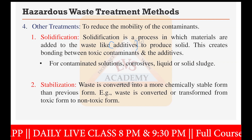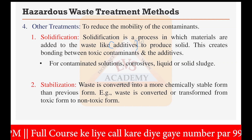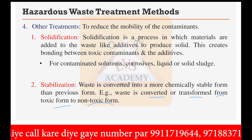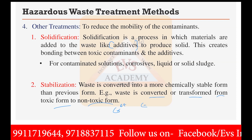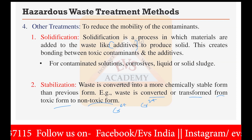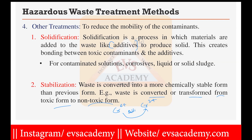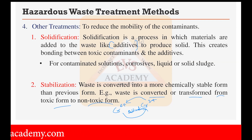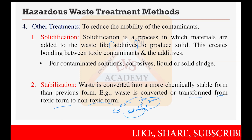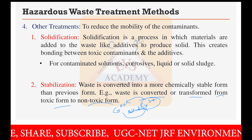The stabilization method converts waste into a more chemically stable form. For example, waste is transformed from a toxic form to a non-toxic form — such as chromium 6+ being converted into chromium 3+. However, this does not mean purification is complete, as chromium 3+ could somehow convert back to chromium 6+ in the environment. For now, converting to non-toxic form is a significant relief.